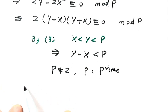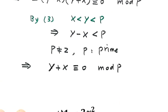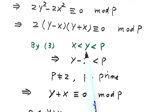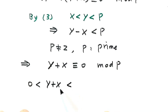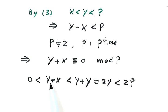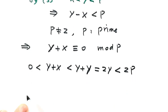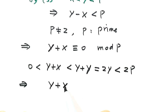Since y plus x is divisible by p, and y plus x is greater than 0, and by Result 3: x less than y less than p, so y plus x is less than y plus y equals 2y, which is less than 2p. So y plus x lies between p and 2p, and since it's divisible by p, we conclude y plus x equals p.